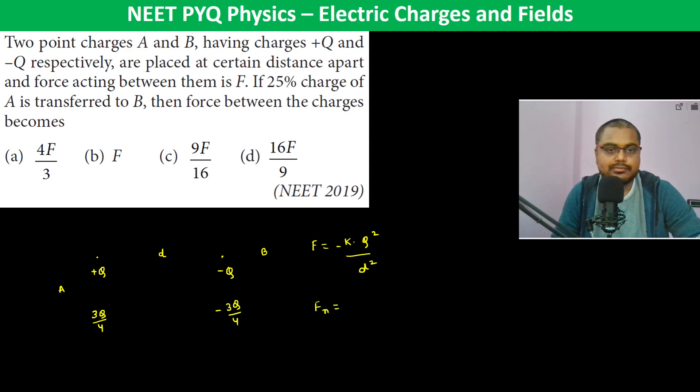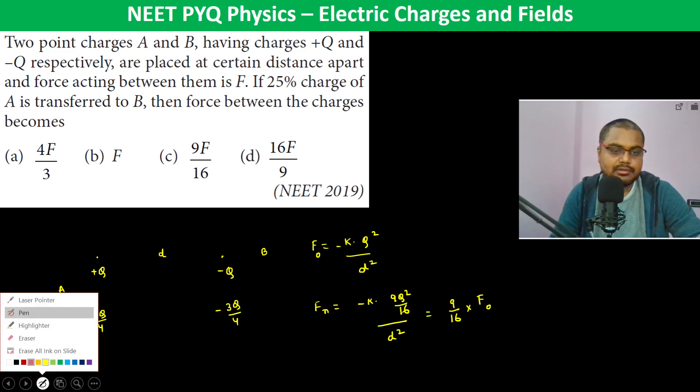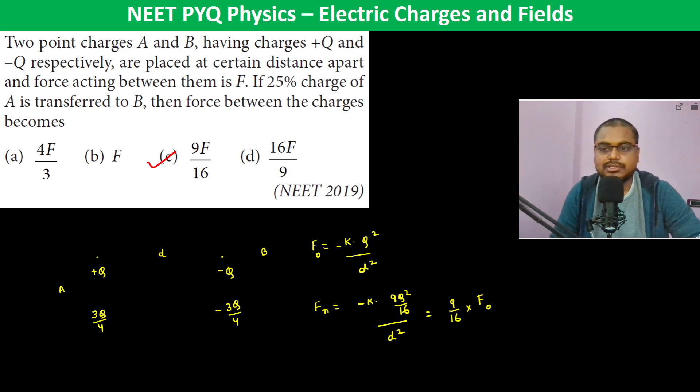The new force is equal to k × 9Q²/16 divided by d². Therefore, the new force becomes 9/16 times the original force F.